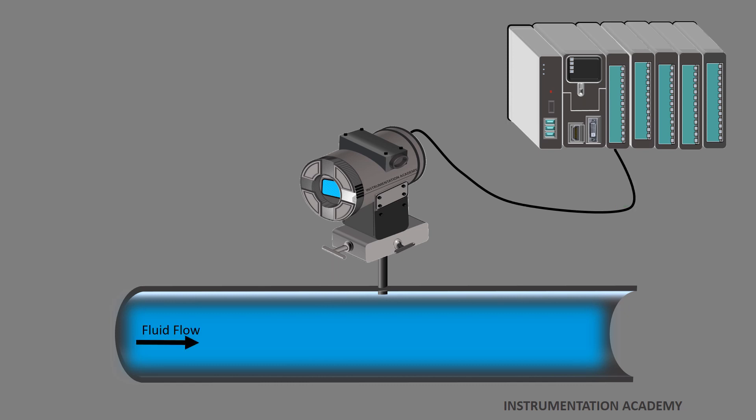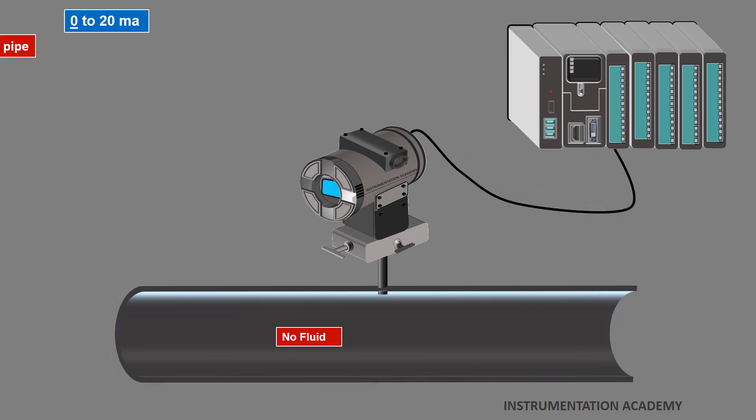Now consider the other case that fluid passing through the pipeline exerts pressure in the range of 0 to 10 bar and the transmitter is calibrated to generate current signal in the range of 0 to 20 mA. When there is no fluid flowing through the pipeline, the transmitter generates 0 mA current at the output terminals.